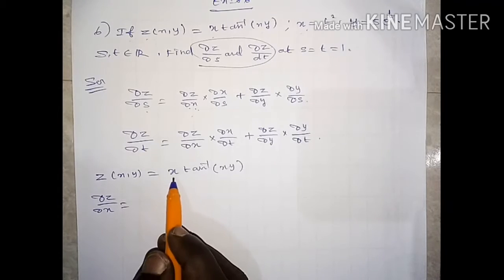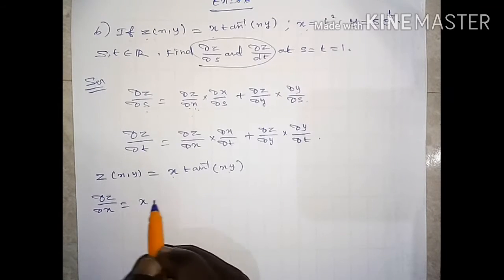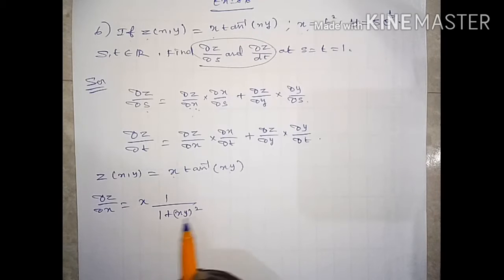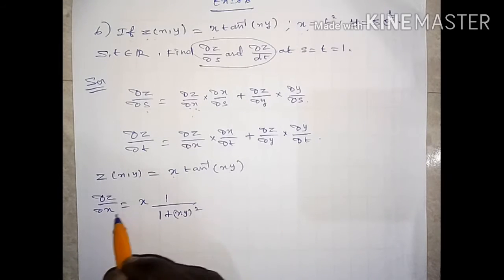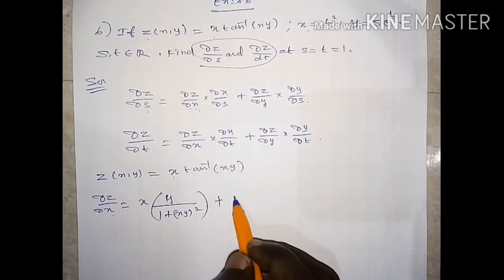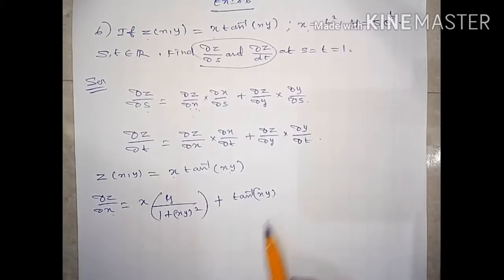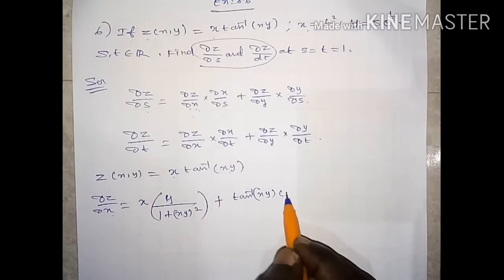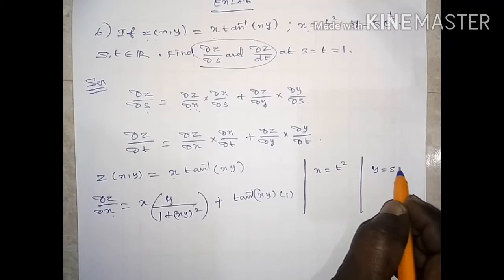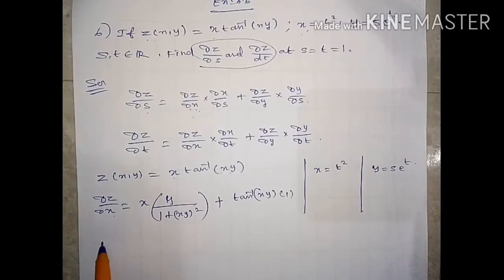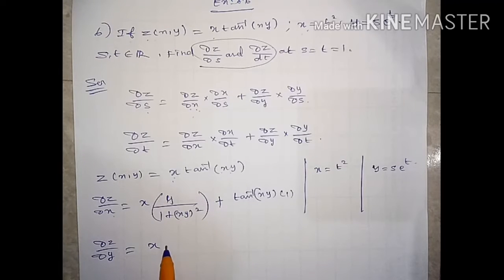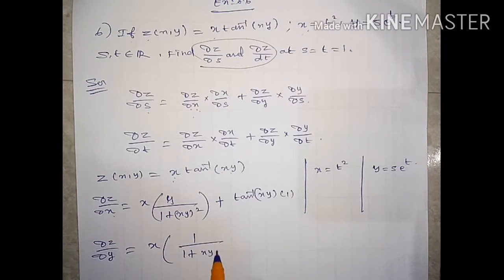Now we have to find dou z by dou x. Using the product rule, x will be the variable and we differentiate. Tan inverse of xy differentiates to 1 by (1 plus xy whole square), and x differentiates to 1 while y is treated as constant.